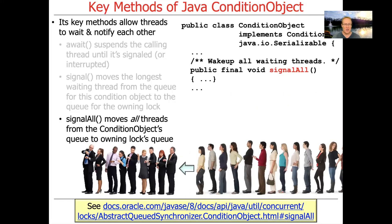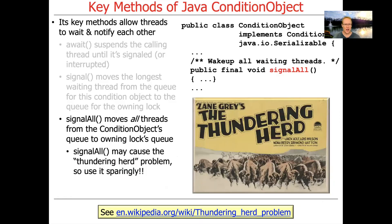In contrast, signalAll moves all the threads from the condition object's queue to the owning lock's queue. As a consequence, you can end up with something called the thundering herd problem — a problem in concurrency and synchronization where you wake a whole pile of threads up only to have most of them go right back to sleep because they couldn't make forward progress.